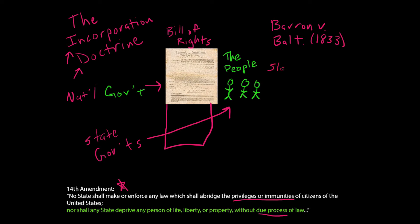In a set of cases called the Slaughterhouse Cases, some slaughterhouses asked the Supreme Court that question. The state of Louisiana had passed a law making a government monopoly on slaughterhouses in New Orleans. This was an 1873 case, right after the Civil War and the 14th Amendment. They asked: doesn't the Privileges or Immunities Clause mean the state government cannot restrict our liberties by taking away our business and giving it to the government? The Supreme Court said no, that's not what the Privileges or Immunities Clause means — and it made the clause basically do nothing.